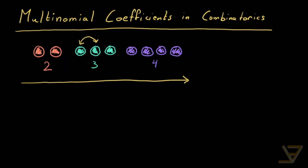The answer is 2 plus 3 plus 4 — the total number of things — factorial, divided by 2 factorial times 3 factorial times 4 factorial.